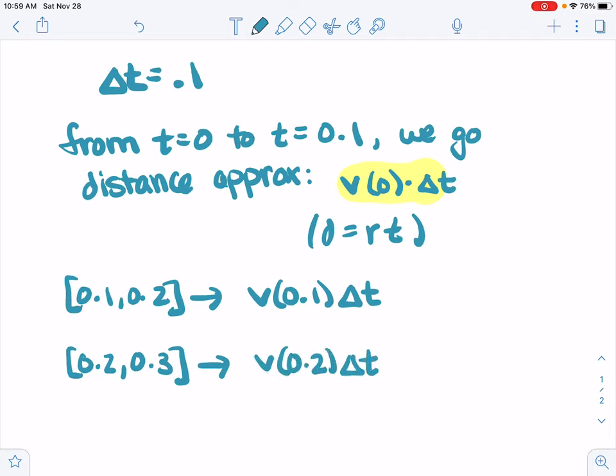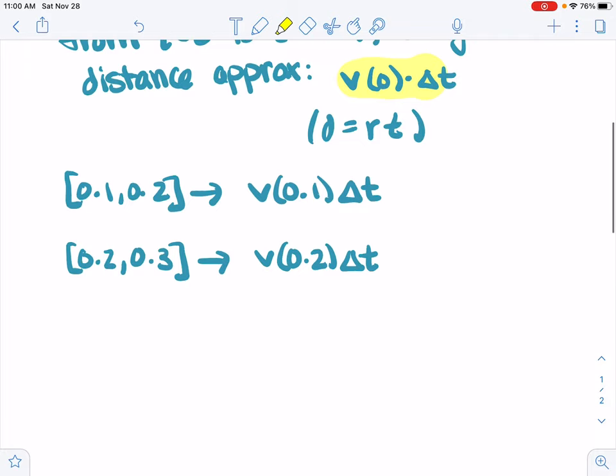These are all approximations of the distances traveled over short times. They're approximations because the velocity is not actually constant over that time interval, but we're using a constant over that time interval. But the time interval is small enough that we probably have a good approximation here. The velocity changes from time 0.1 to 0.2. But if we just use the velocity at 0.1, multiply by time 0.1, then we get a good approximation for how far we've gone over that time interval.